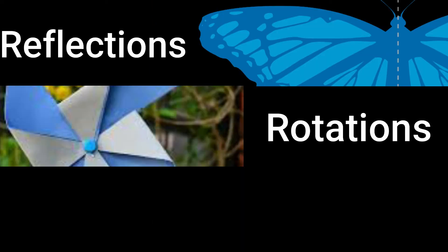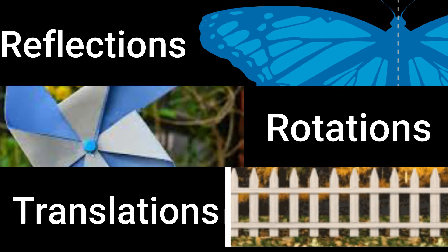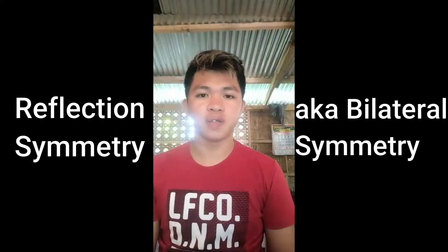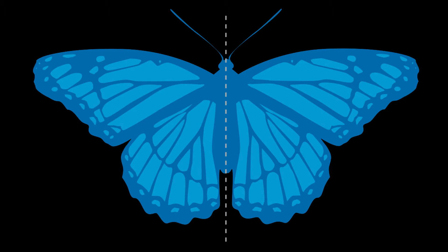You are right, Ryan. There are actually a lot of types of symmetry according to Ian Stewart, but we will only discuss the most notable ones, which are reflections, rotations, and translations. First is reflection symmetry, also known as bilateral symmetry — it is when one half of a pattern is the same as the other half. You can also call this the mirror effect.